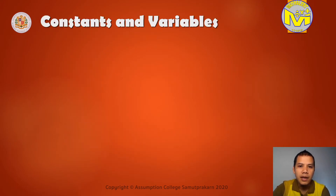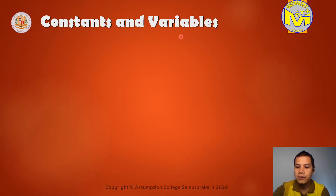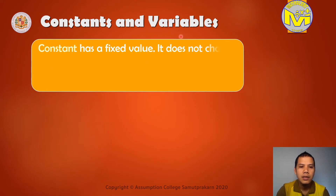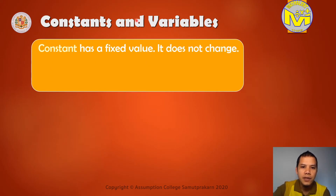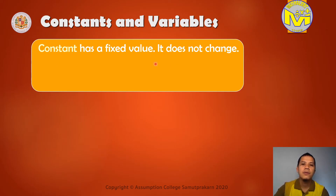Constants and variables. In algebra, there are constants and also there are variables. So what is a constant and what is a variable? What is the meaning of these two words? A constant has a fixed value. It does not change.